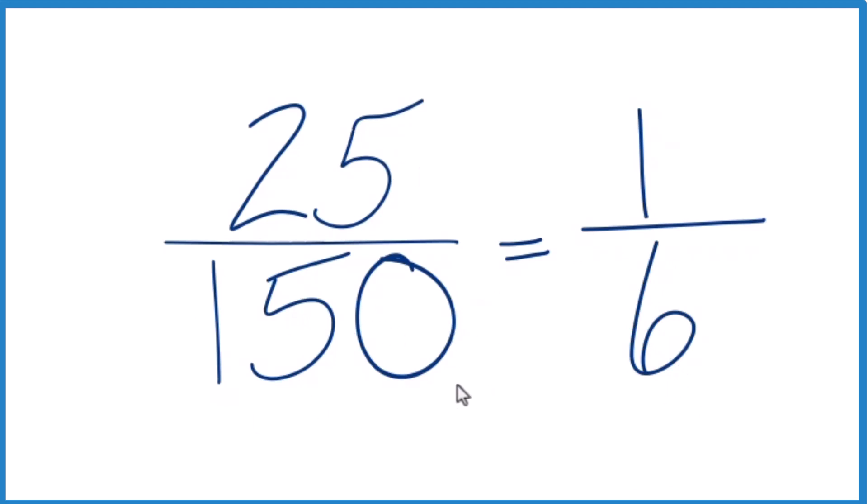So when we simplify the fraction 25 over 150 down to lowest terms, we get the fraction 1 over 6. We can't simplify this any further.